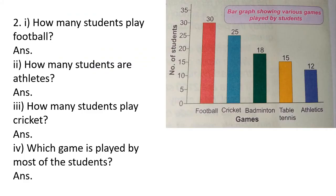In the next question, we have to read the graph and answer the following questions. As you can see in this graph, on the vertical axis number of students are given and on the horizontal axis games are given — this graph represents various games played by students. The first question is how many students play football. You can see the red bar for football goes up to 30, so 30 students play football.